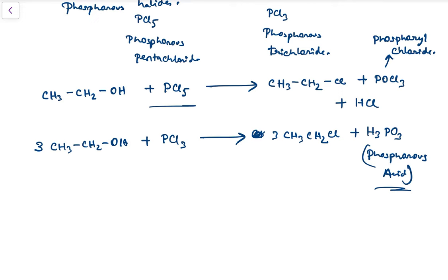In the case of PCl₅, the side products are POCl₃ and HCl. In the case of PCl₃, the alkyl chloride is the same but the side product is phosphorous acid.